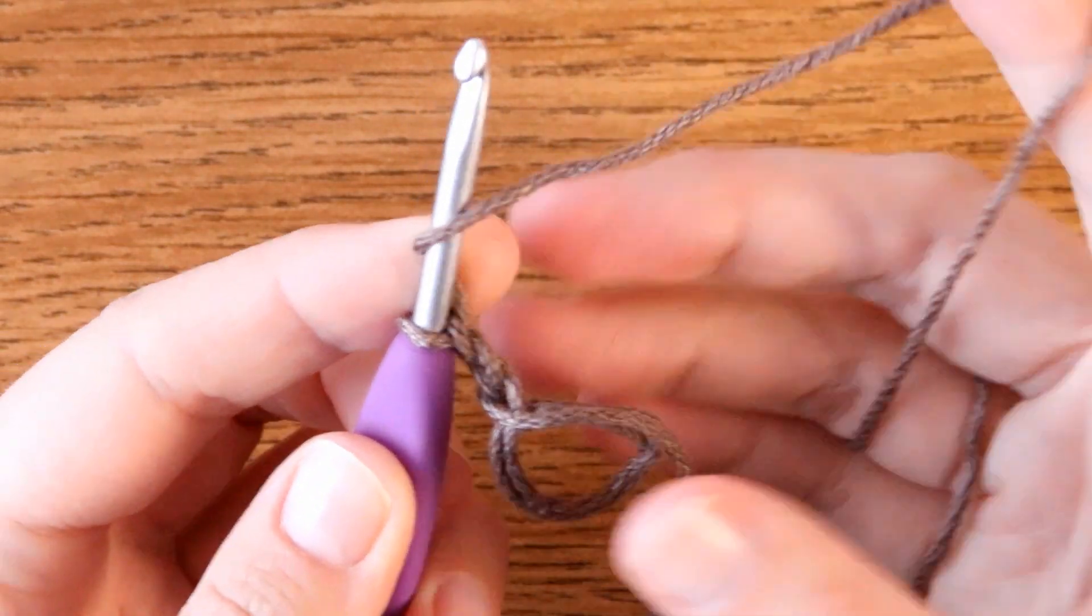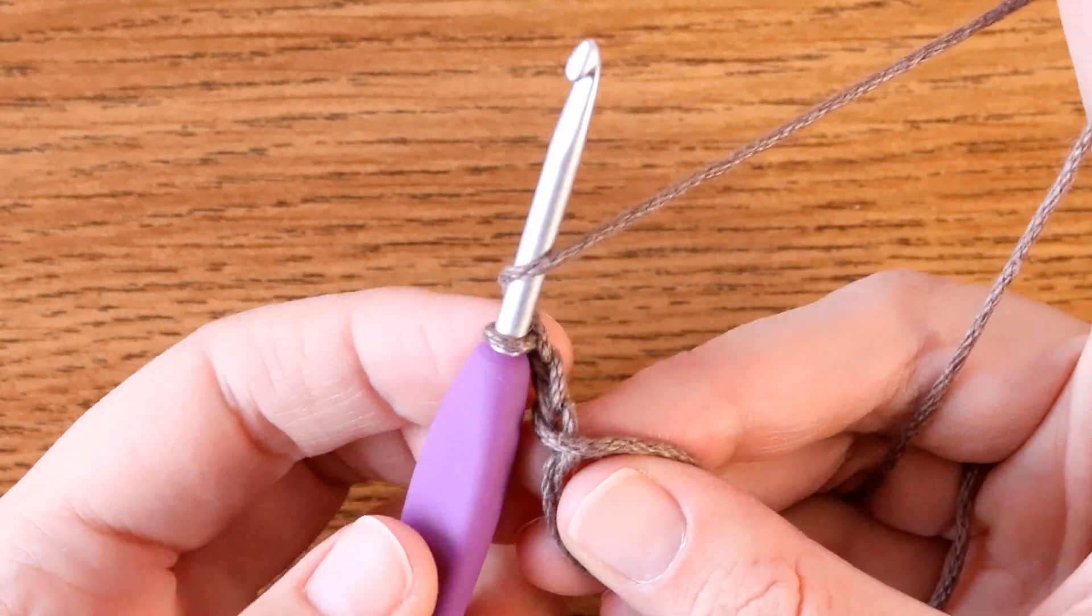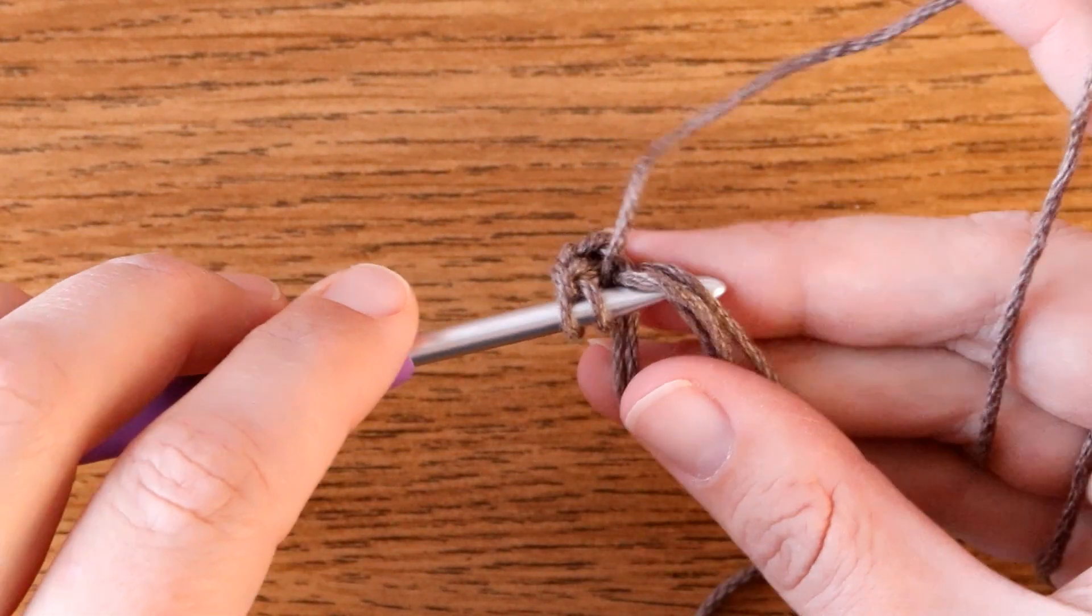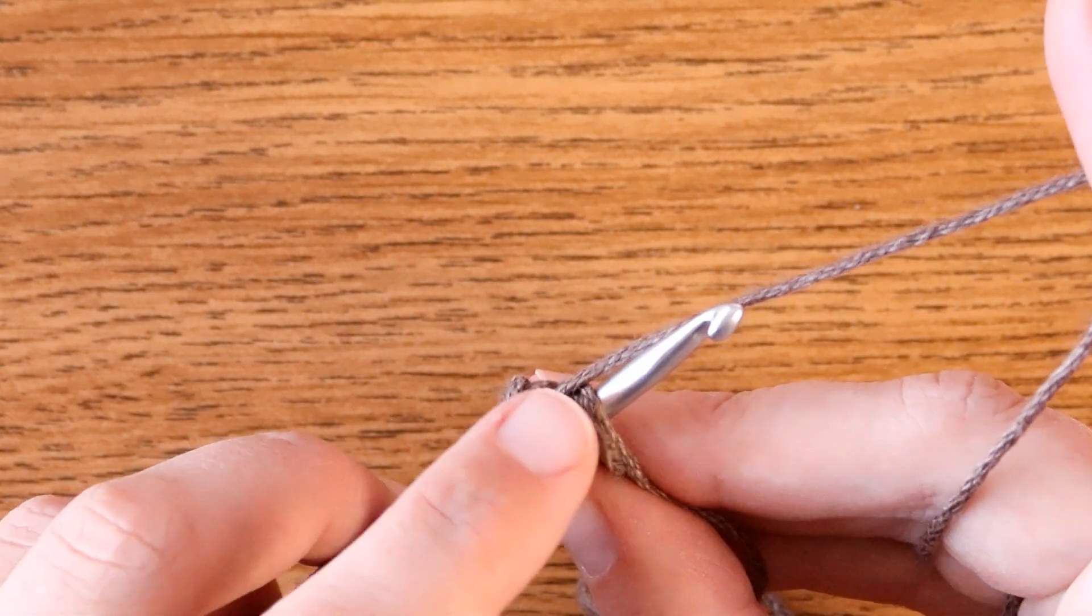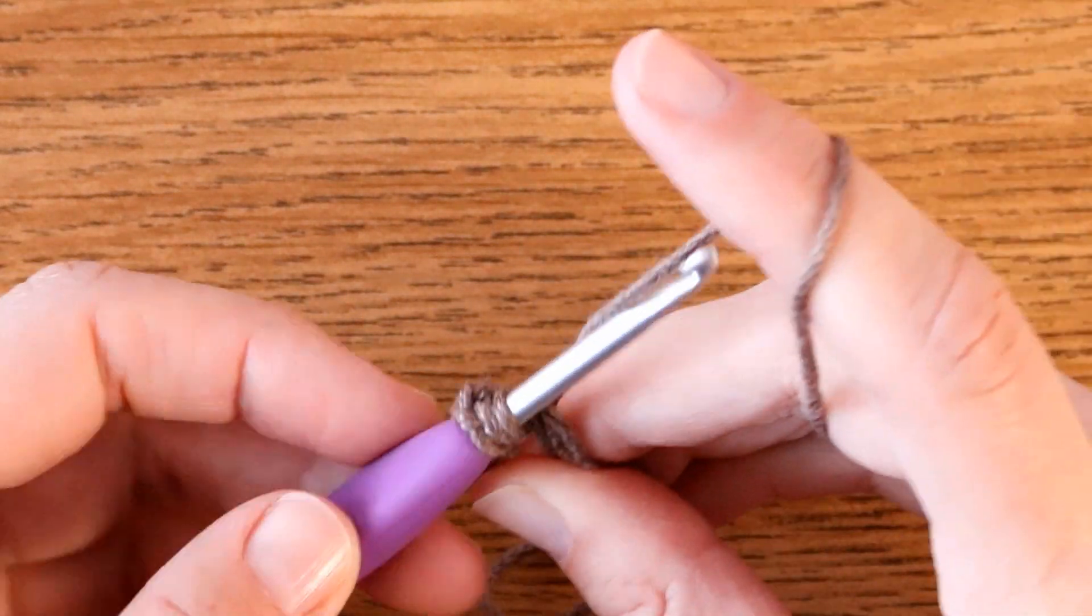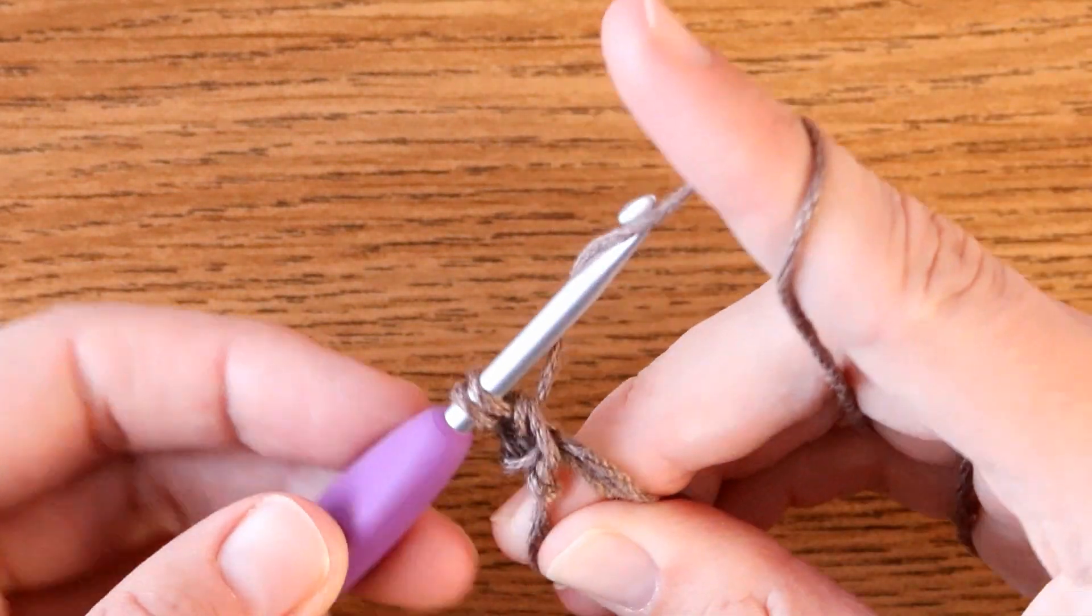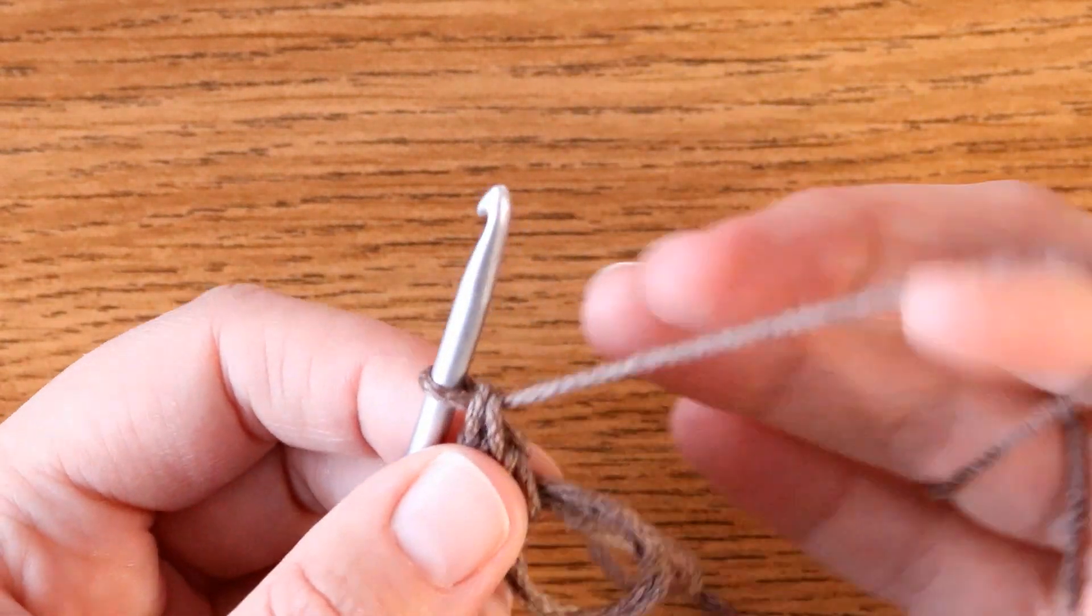For granny squares I need to start making trebles, so I'll wrap my yarn around my hook, insert through that big hole, go underneath all those little cords that make up our hoop, grab your yarn and pull through, grab and pull through two, grab and pull through two, making trebles the same as we did in the last tutorial.